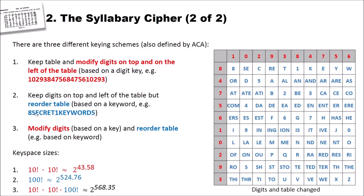Then we have the third keying scheme, and that is modify the digits based on a key and reorder the table, for instance based on a keyword. This is actually what we have done here with this table. We have reordered or modified the digit key here, the digits, and we have reordered the table. So this here is created using keying scheme 3.